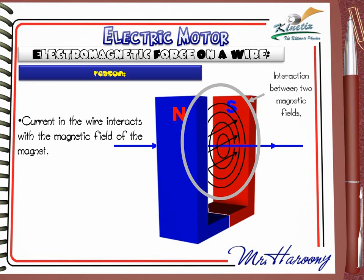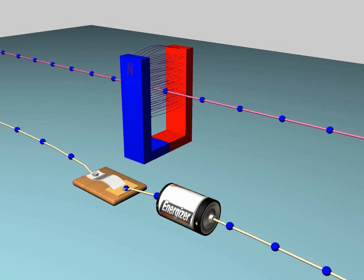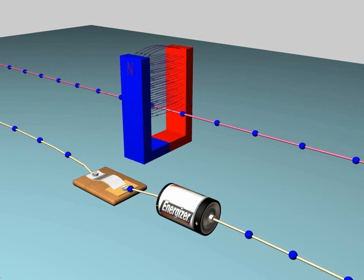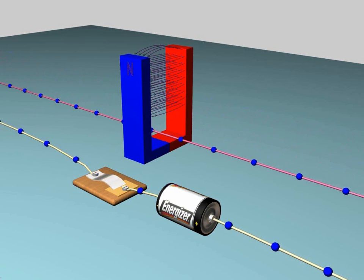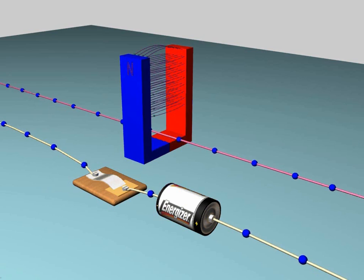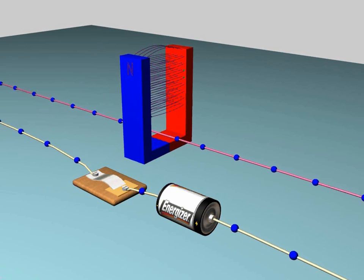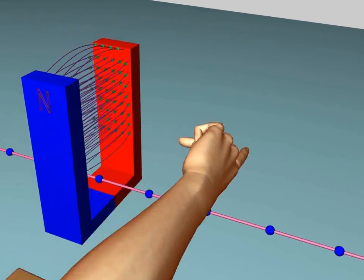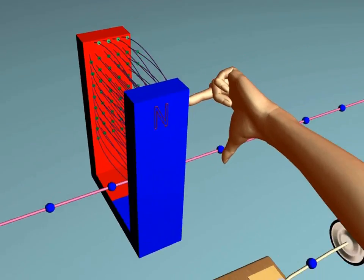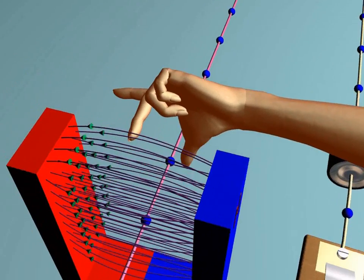Another suitable explanation is that we can directly say the current in the wire interacts with the magnetic field of the magnet, causing a force on the wire. Now the question is: can we predict the direction the wire will be pushed? The answer is yes. The rule that tells us the direction of the force is named Fleming's Left Hand Rule.